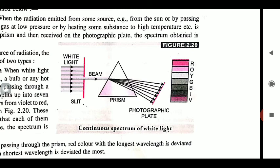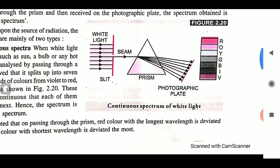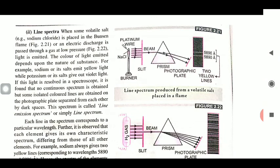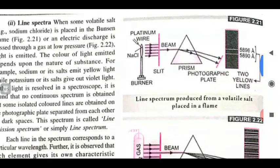Remember: if on the photographic plate the different colors you get have no specific gap between them, that spectra is called continuous emission spectra. Now the second type of emission spectra is called line spectra. This is the second type of emission spectra.